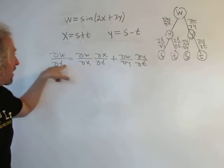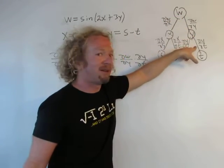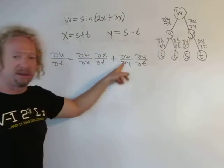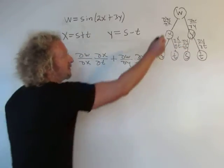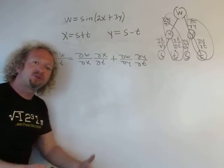The other way to get to a del t is del w, del y, del y, del t. So if you follow it this way, and you follow it this way, you get what we have here.